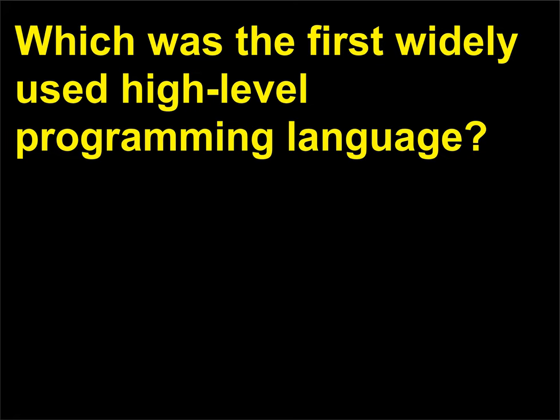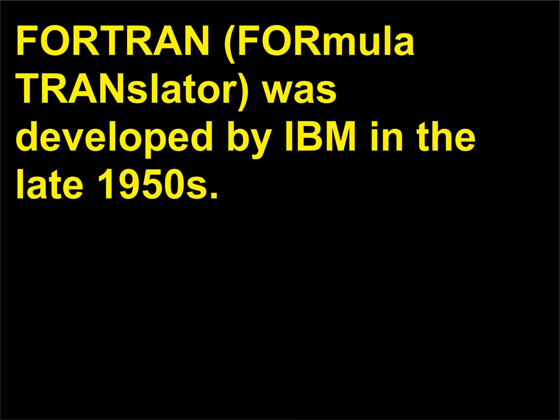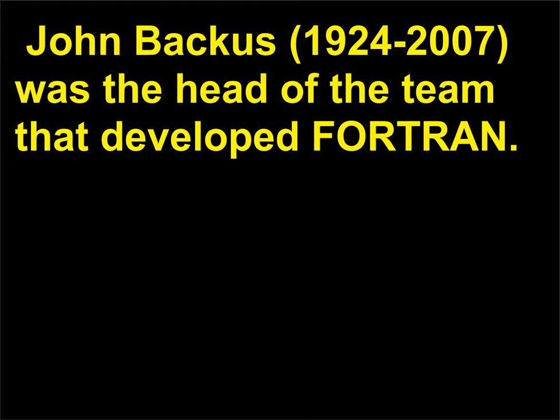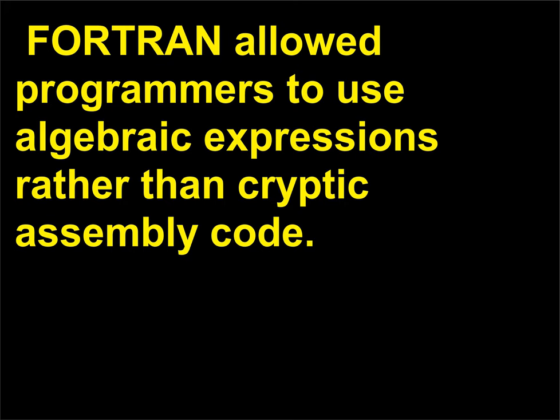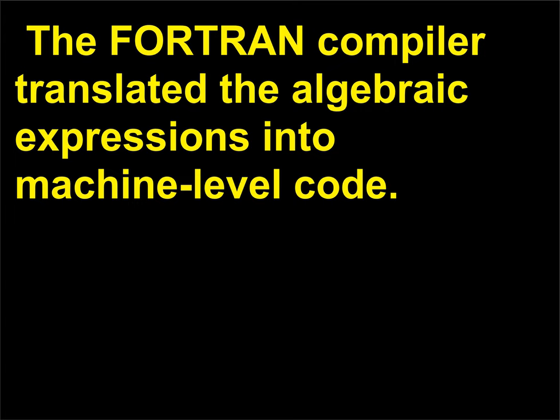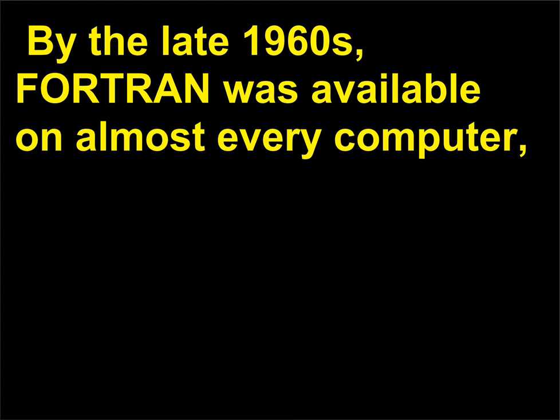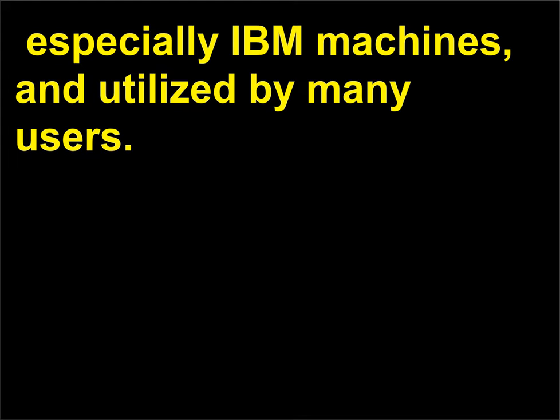Which was the first widely used high-level programming language? Fortran, Formula Translator, was developed by IBM in the late 1950s. John Backus, 1924–2007, was the head of the team. Designed for scientific work containing mathematical formulas, Fortran allowed programmers to use algebraic expressions rather than cryptic assembly code. The Fortran compiler translated the algebraic expressions into machine-level code. By the late 1960s, Fortran was available on almost every computer, especially IBM machines, and utilized by many users.